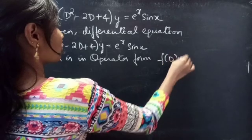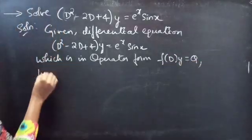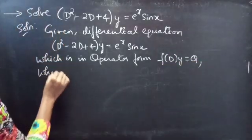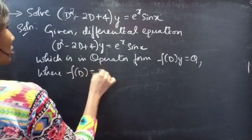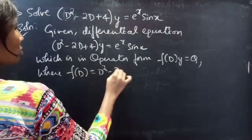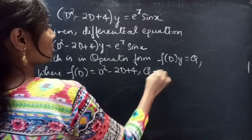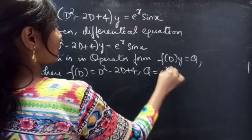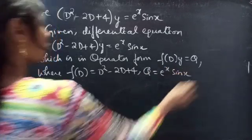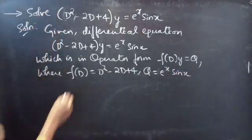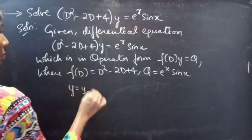Given the differential equation f(D)·y = Q, where f(D) equals D squared minus 2D plus 4, and Q is e to the power x sine x. Now we need to find the general solution to the given equation, which is given by y equals yc plus yp.